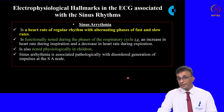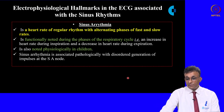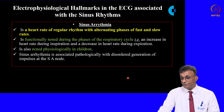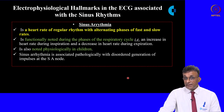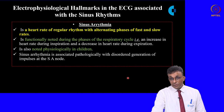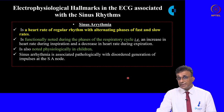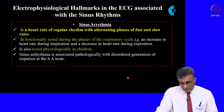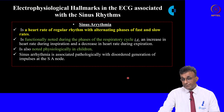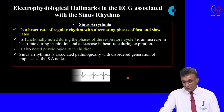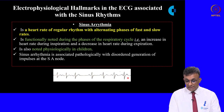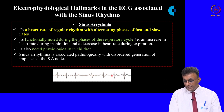Sinus arrhythmia is a heart rate with alternating phases of fast and slow rates. Physiologically, it is seen in children and during different phases of the respiratory cycle — the heart rate increases during inspiration and decreases during expiration. Pathologically, it is associated with disordered impulse generation in the SA node. This tracing shows the heart rate being fast, then slowing, then becoming fast again.